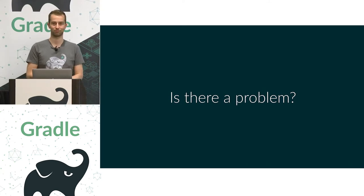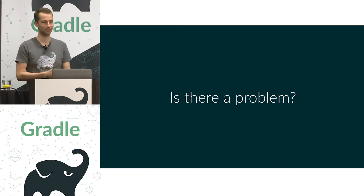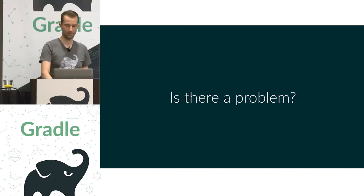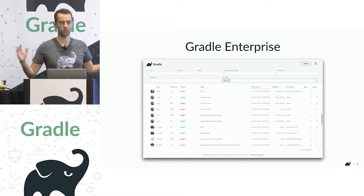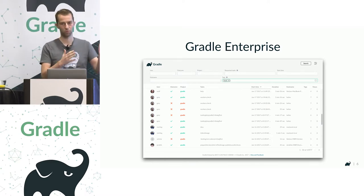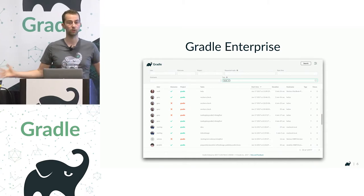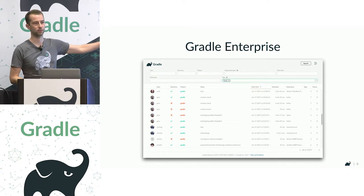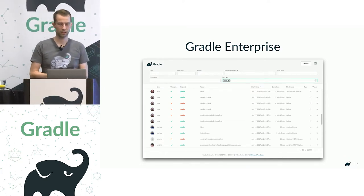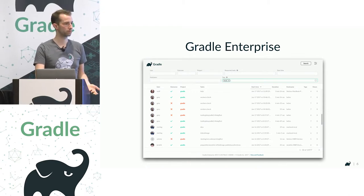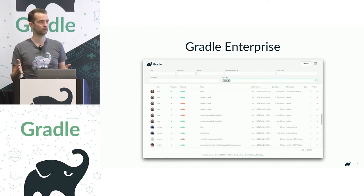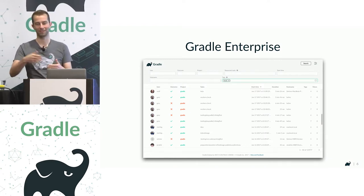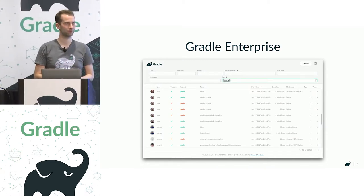How do you know there's a problem, especially if you have a bigger team and you can't check in on everybody every day? That's where Gradle Enterprise comes in. With Gradle Enterprise you can gather data from all your builds — not just CI builds, but also local builds — and get an overview of all builds across your whole organization. You can see what your developers are doing, how they're using the build, and what's wasting their time. There's probably more to optimize than you can do in the next six months, so you need to find the biggest bang for your buck.